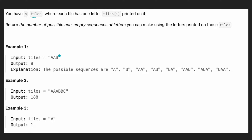So for example, let's take this example: we have A, A, B. How many possible sequences can we make? We can make A, B, A, A, A, B, and so on. So how are we going to solve this problem?